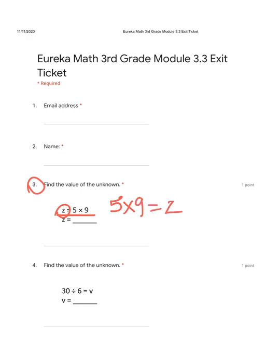So you may have seen it written like this, 5 times 9 equals blank. So Z is the same thing as blank. They're just replacing that with a letter, and it could be any letter, but in this problem it is Z. So do you know what the answer of 5 times 9 equals? Yeah, it equals 45. So Z equals 45.